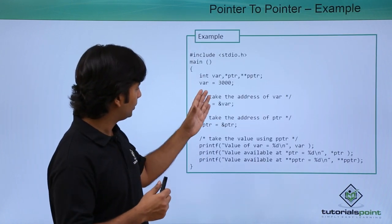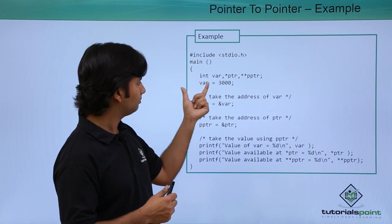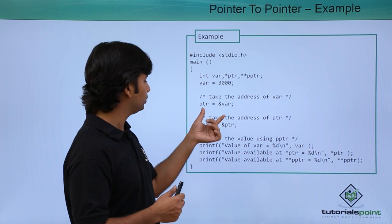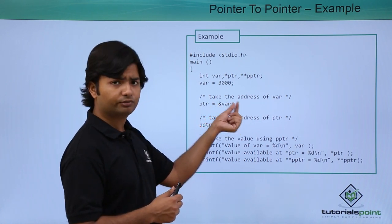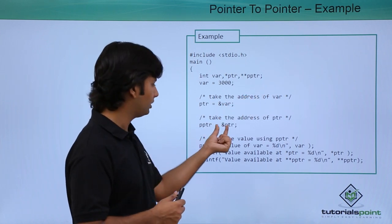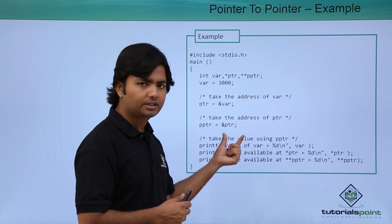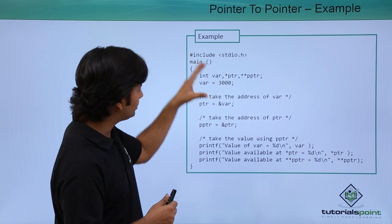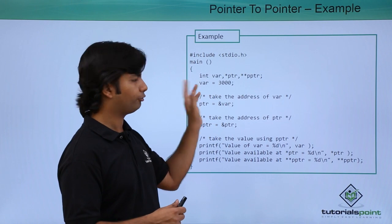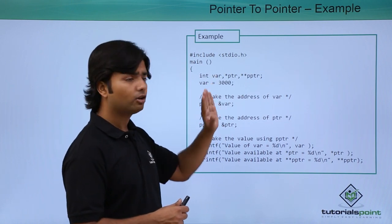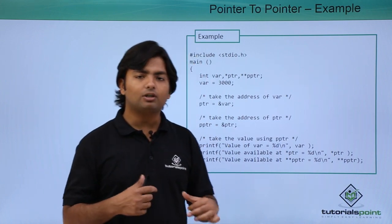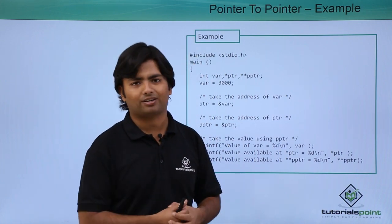Here, var is a variable of integer type storing some value. ptr is used for storing the address of this variable, and pptr — that is pointer to pointer — is storing the address of ptr. So this is the basic implementation: I can read the value of var directly, or through the pointer, or from the pointer to pointer. Let's see all such scenarios in practice now.